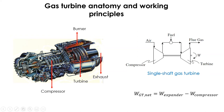The balance, which is one-third of the work, is used to produce power. By that mechanism, we calculate the net work from the gas turbine, equal to the overall work generated by the expander minus the work required to drive the compressor.